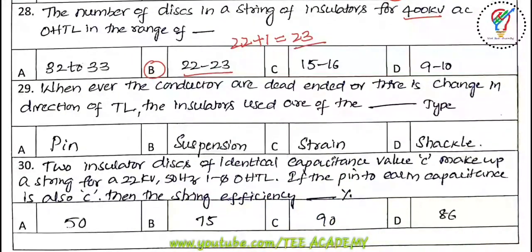Twenty-ninth question: whenever conductors are dead-ended or there is a change in direction of a transmission line, the insulator used is of which type? The options are pin type, suspension type, strain type, and shackle type. The correct answer is strain type.